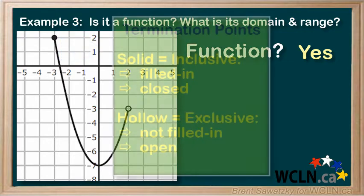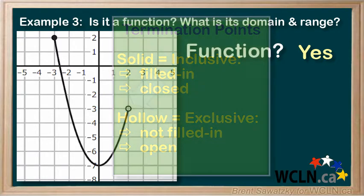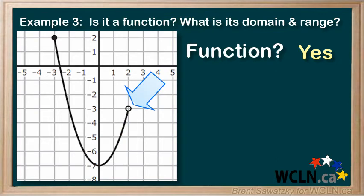A hollow termination point, on the other hand, indicates that the point itself is excluded from the relationship. It's therefore called an exclusive termination point. That is, in this relationship, the point is excluded. It's not part of the relationship.